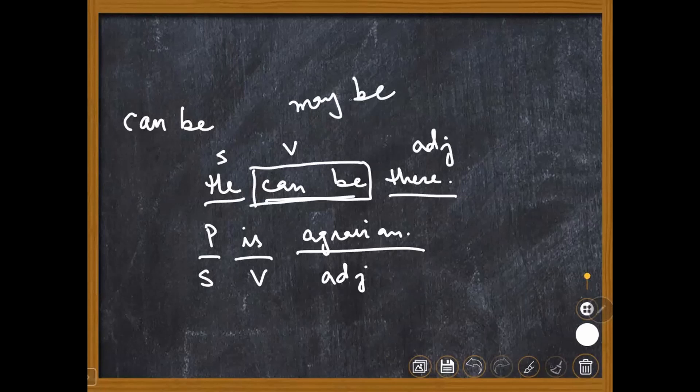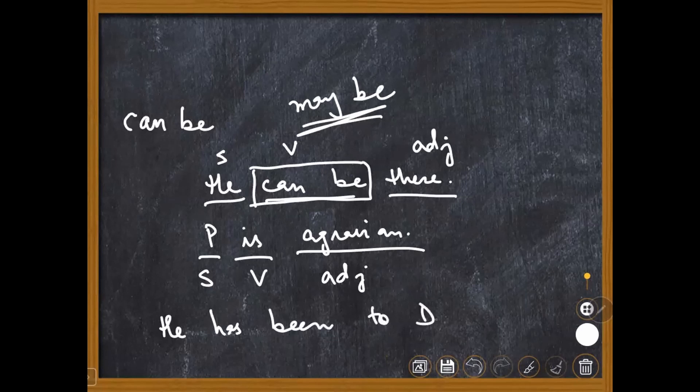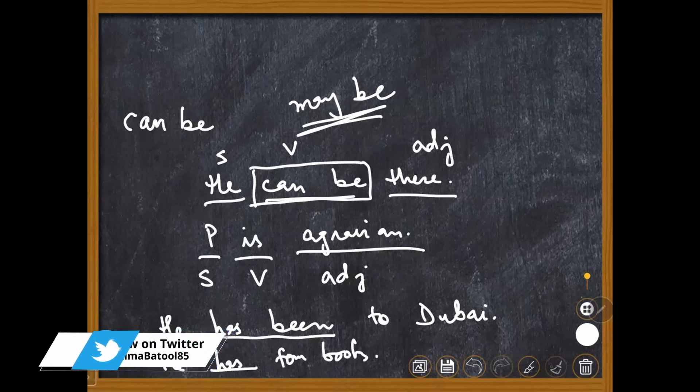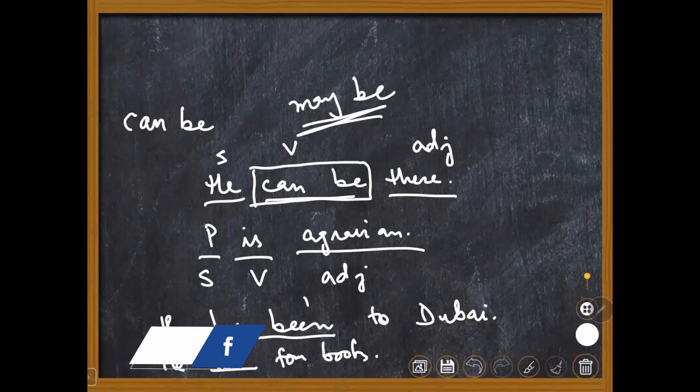He has been to Dubai. He has been to Dubai. The structure is similar - has been is functioning as a linking verb in this sentence. He has been to Dubai.